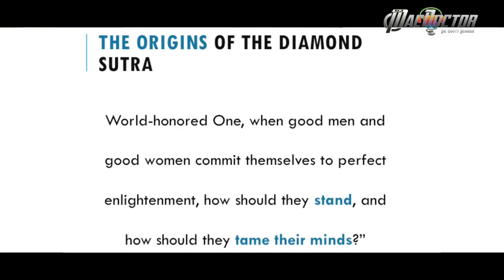Let's read this verse together: 'World Honored One, when good men and good women commit themselves to perfect enlightenment, how should they stand, and how should they tame their mind?' The word 'stand' in Chinese is 'zhu,' which has two meanings: to abide somewhere, to be firm, steady and unmoving, to be fixed — and also to be attached. In English we can use 'stand' or 'abide,' though 'abide' tends to have the connotation of attachment. So we use the word 'stand': where should we stand when we give rise to the mind of a bodhisattva?